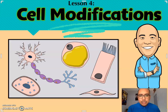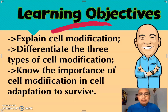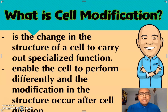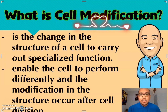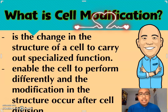Let me share our learning objectives. The first one is to explain cell modification. The second one is to differentiate the three types of cell modification. And the third one is to know the importance of cell modification and cell adaptation in order for the cell to survive. Cell modification is the change in the structure of a cell to carry out a specialized or specific function — it enables the cell to perform differently, and the modification occurs after cell division.